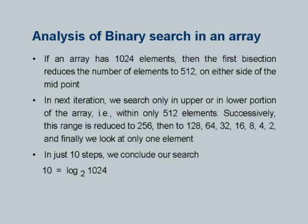Here is one more slide to demonstrate the analysis of binary search in an array. If an array has 1024 elements, a sequential search would require on average half the elements to be compared — about 512 searches. However, if we use binary search, it reduces the elements to be searched to 512 on either side of the midpoint. In the next iteration we search only upper or lower half, further reducing to 256, then 128, then 64, then 32, then 16, and so on.